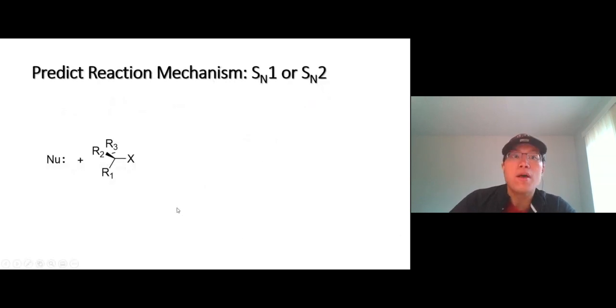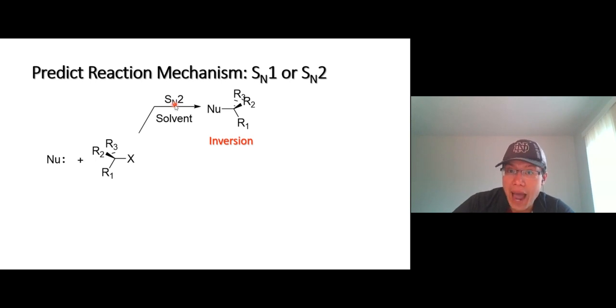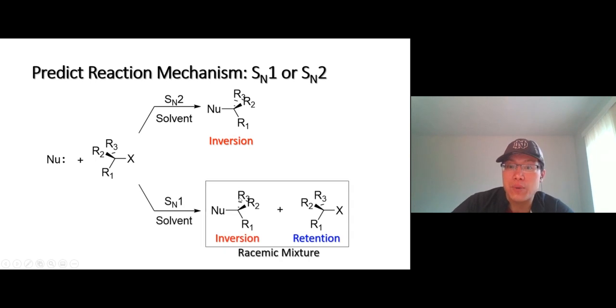Here's what we're going to use now. Predicting the product of a substitution reaction is really important. A substitution reaction can go either way - can go SN2 reaction, you get an inversion product, or SN1 reaction, you get a racemic mixture. Why do we care about predicting products of a substitution reaction?